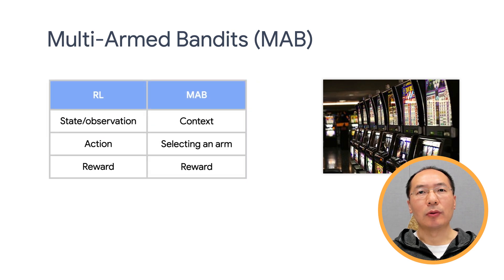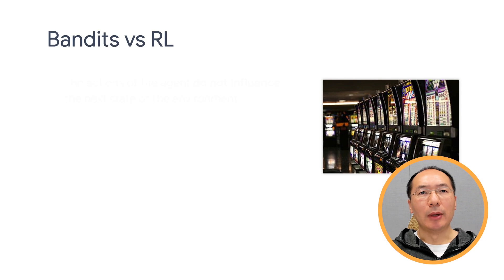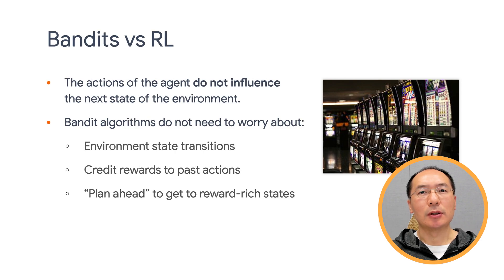You may be curious: why is the Bandits library in TF Agents? You can think of multi-armed bandits as a special case of reinforcement learning. Usually, there is a piece of side information associated with the arms in the bandit setting. We call this side information context, which is the equivalent of state or observation in reinforcement learning. The actions and rewards are the same as in the reinforcement learning setting. The main difference is that in MAB, we assume that the actions taken by the agent do not influence the next state of the environment. Therefore, agents do not model state transitions, credit rewards to past actions, or plan ahead to get to reward-rich states.